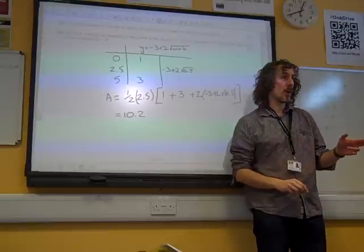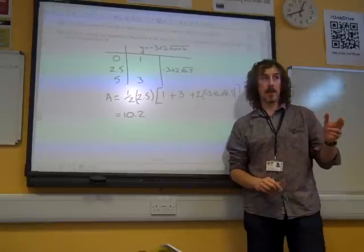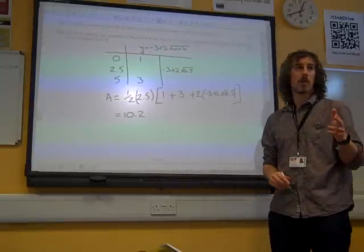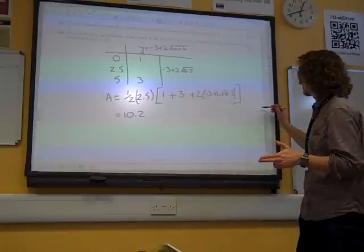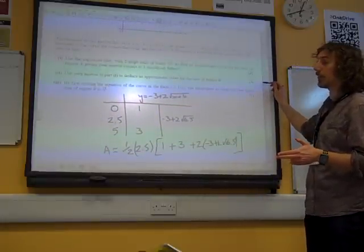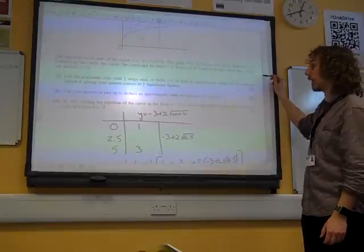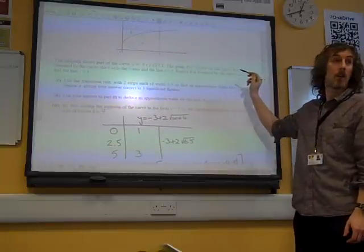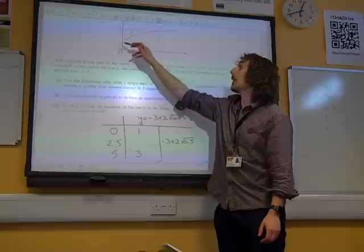Part 2 was strangely, for being in the last question, possibly the easiest two marks on the whole thing. Because it said, use your answer to part 1 to deduce an approximate value for the area of region B.